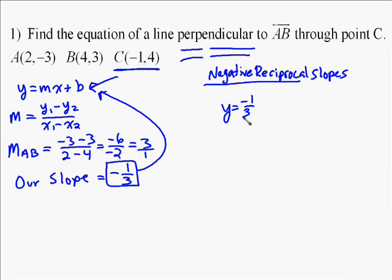The second step is to always insert a point, so you plug in negative 1 for x and 4 for y. So you get 4 equals a negative 1, or positive 1 third plus b. Once you multiply negative 1 third times negative 1, that equals a positive 1 third.